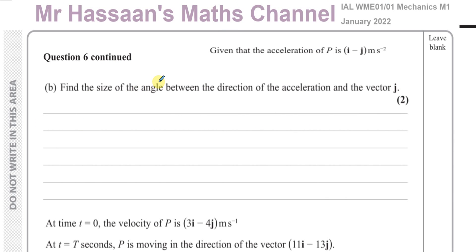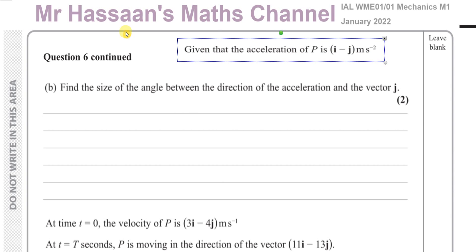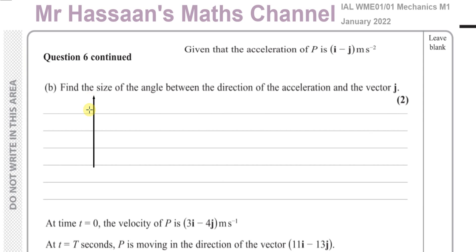Part b asks us to find the size of the angle between the direction of the acceleration and the vector j. The acceleration vector was given as i − j. The vector j points vertically upward — you could think of it as pointing north.